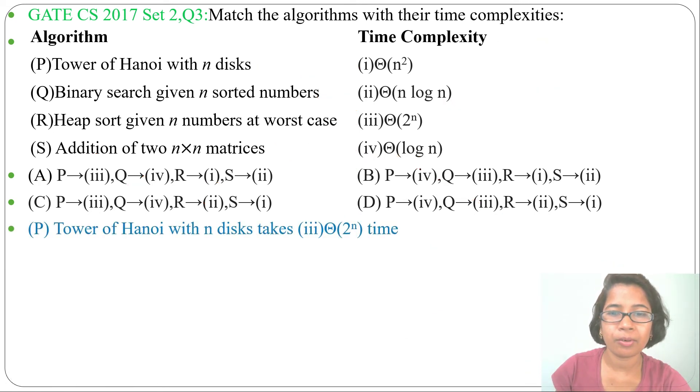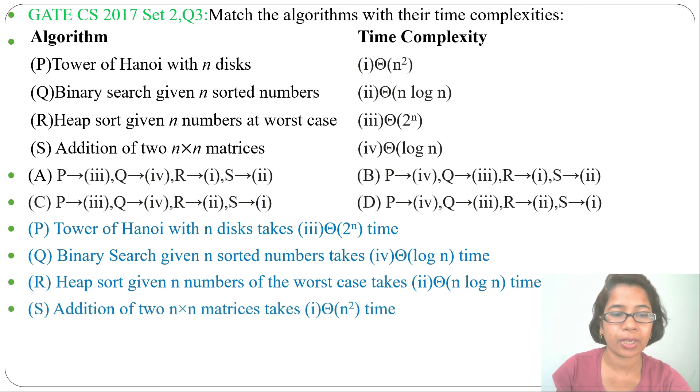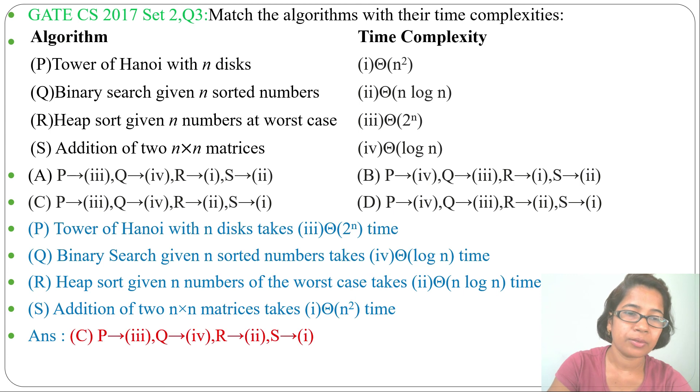So we have: Tower of Hanoi running time is Θ(2^n), binary search running time is Θ(log n), heap sort running time is Θ(n log n), and addition of two n×n matrices running time is Θ(n²). The answer is option C.